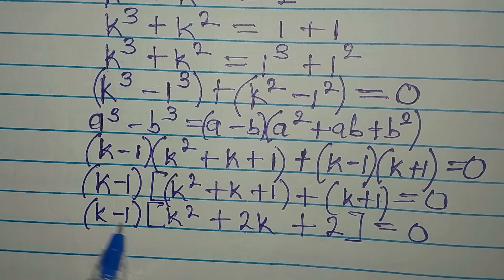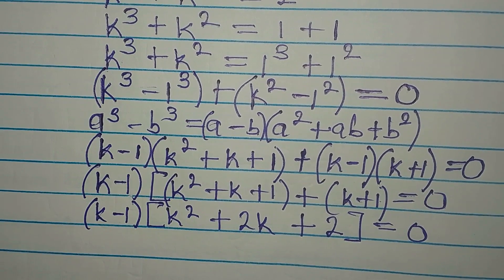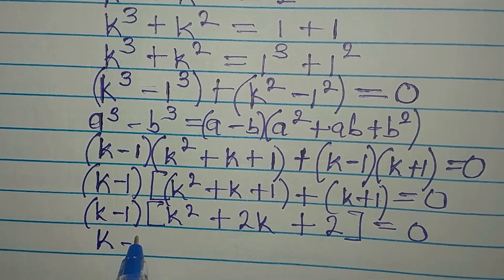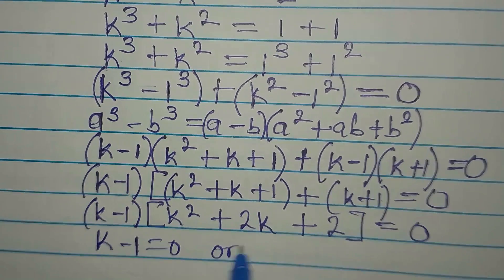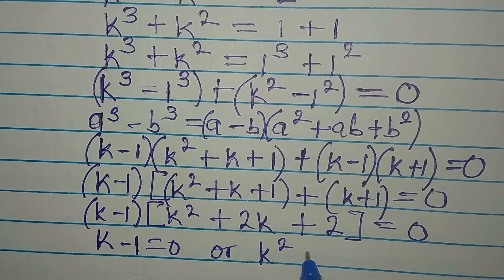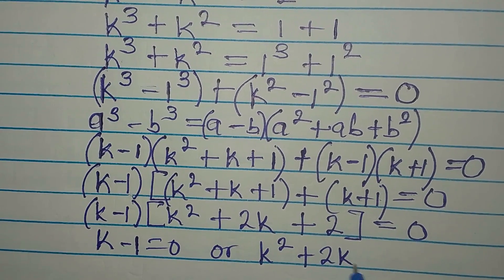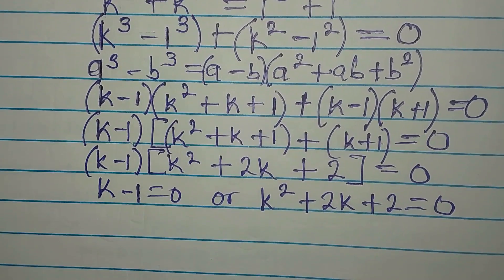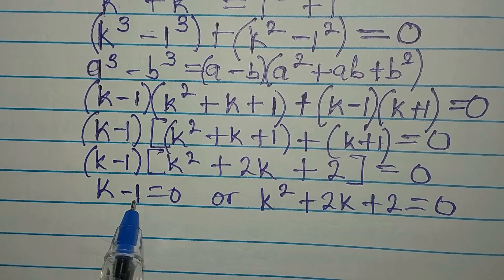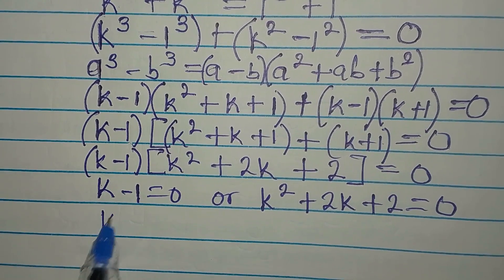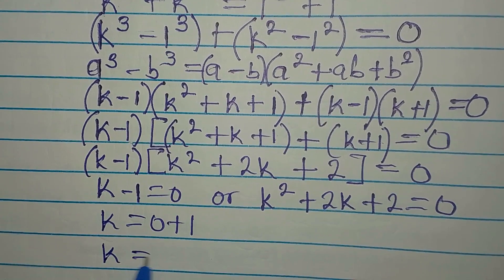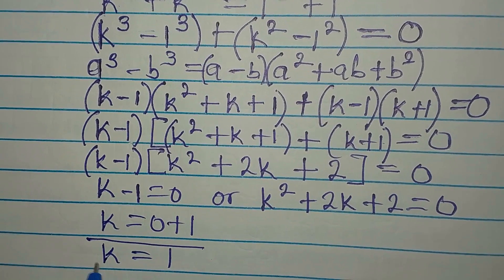Since we are multiplying two factors together equal to zero, one of them must be zero. So either k - 1 = 0 or k² + 2k + 2 = 0. From k - 1 = 0, k is equal to 0 + 1, so k = 1. This is one of the solutions.